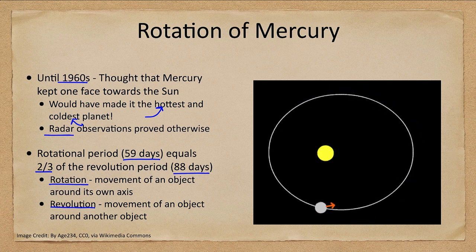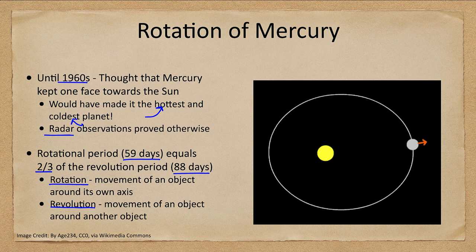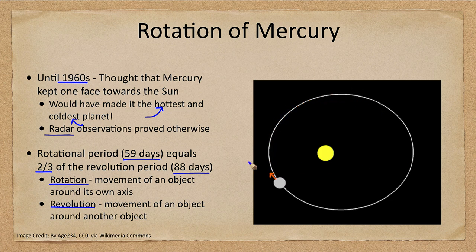We often get a one-to-one resonance, as we have with our Moon, where the rotation and revolution periods are equal. Perhaps because of Mercury's more elliptical orbit, it gets a different resonance. But that does mean that Mercury is neither the hottest nor the coldest planet in the solar system.